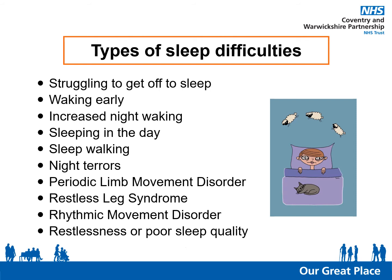Other sleep difficulties include sleepwalking, night terrors, periodic limb movement disorder — which is an involuntary movement during sleep — and restless leg syndrome, which may happen during sleep or when awake and presents as an irresistible desire to move the limbs. Rhythmic movement disorder can be observed just prior to or during sleep, where the child may rock or move the arm, hand, head or trunk rhythmically. These movements may be gentle self-soothing, or more extreme. Restlessness and poor sleep quality, such as not achieving the full REM cycle, are also concerns.